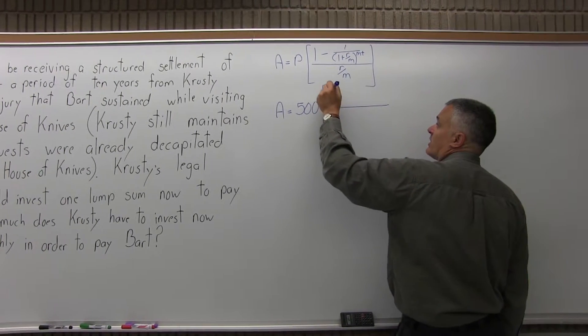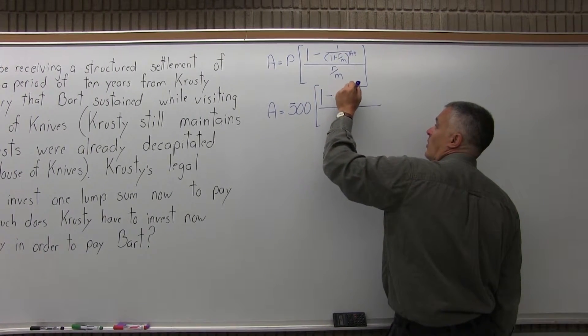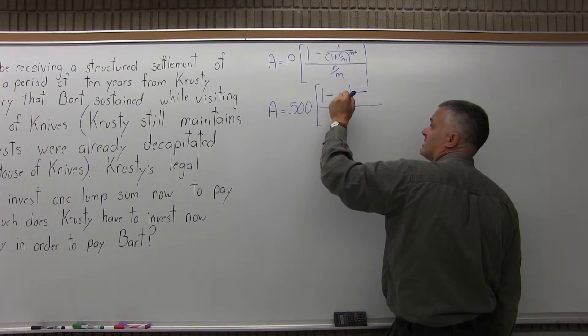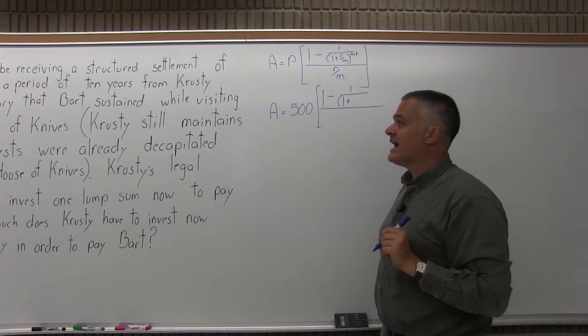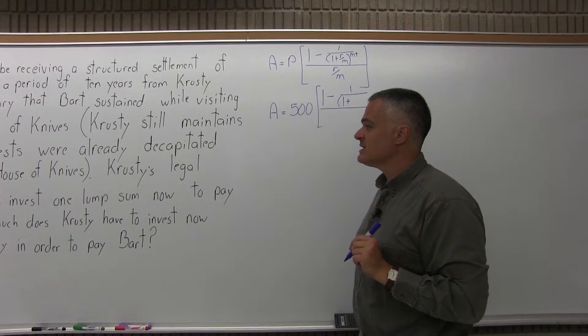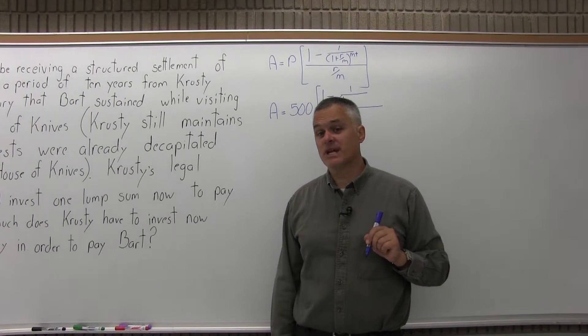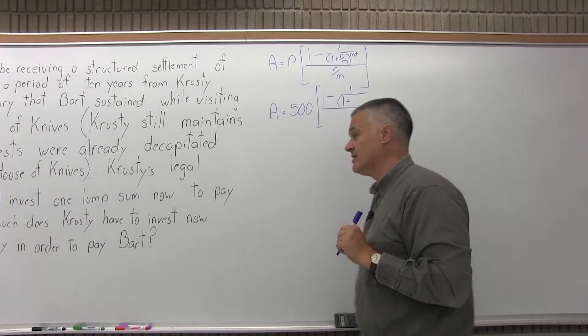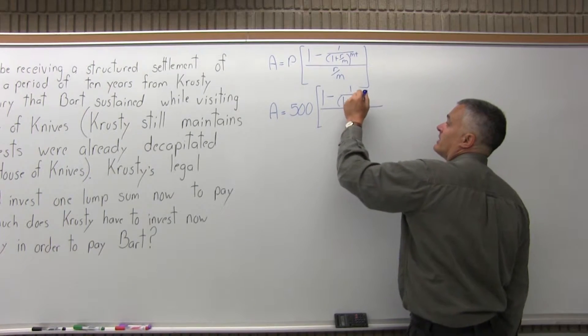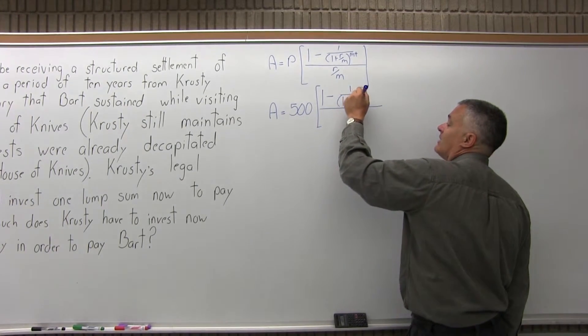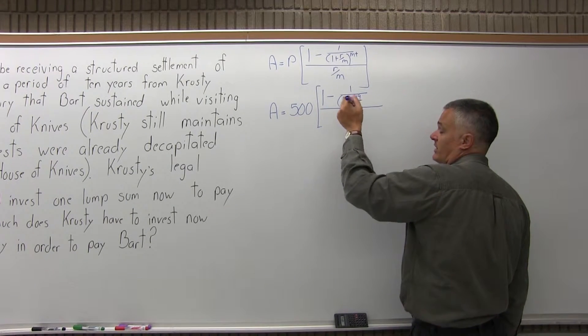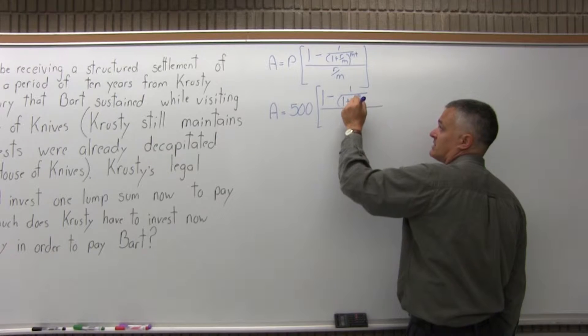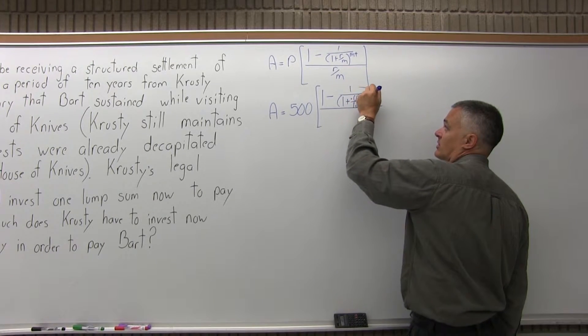Now in the brackets in the numerator, we have 1 minus 1 over, in parentheses, 1 plus R over M. Now the R is the rate as a decimal, so the rate as a decimal for this problem is 9%, well as a decimal, it's .09. So I'm going to have .09 over M, now M is the number of payments made per year, or the type of compounding, which for this is 12. I'm going to close the parentheses.